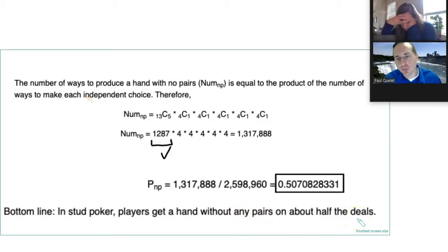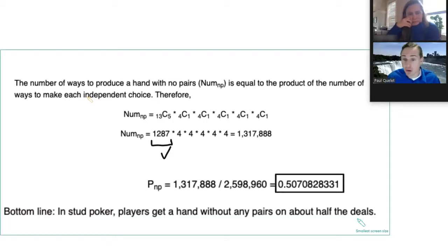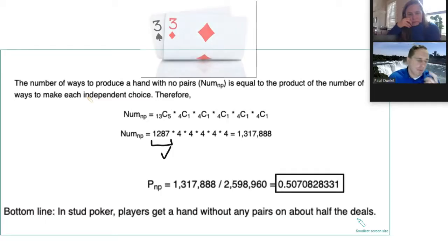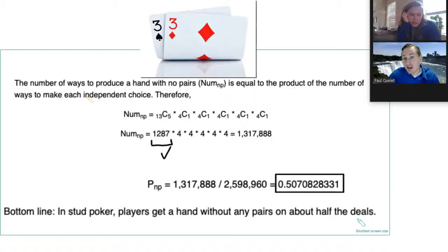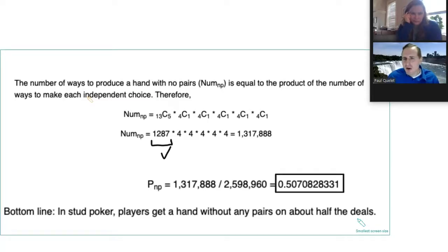I learned to play poker from my uncle Steven. He used to tell me: if you have a pair when you first get your hand, always hold it. I understand what he means now — you only get a pair a little less than half the time. In five card draw, if you have two threes and then a six, seven, nine off-suit, hold the threes. You could get a full house, three of a kind, or two pair — all pretty good hands.